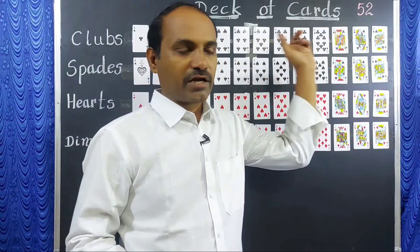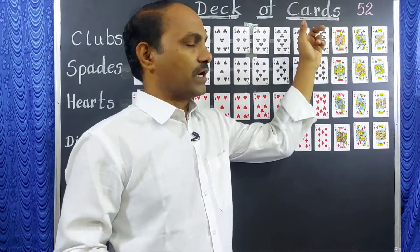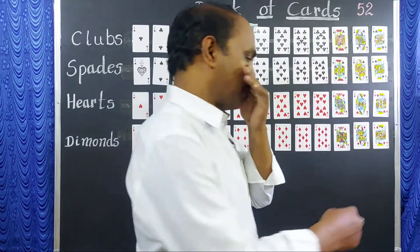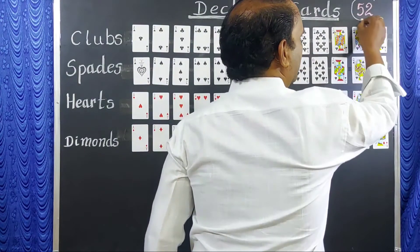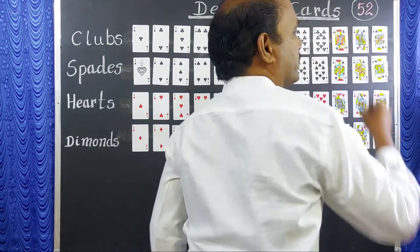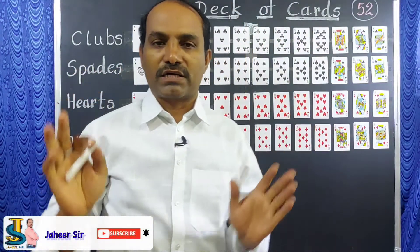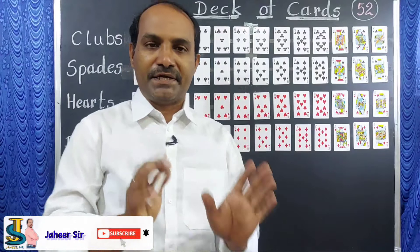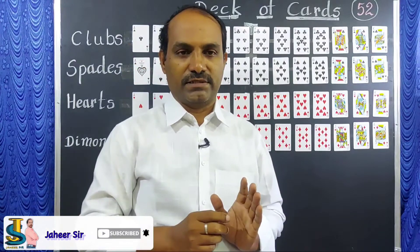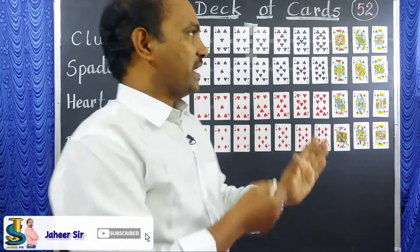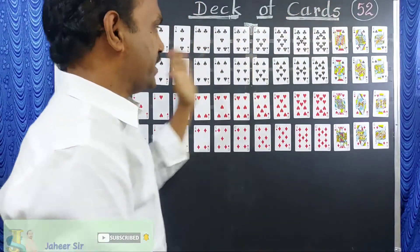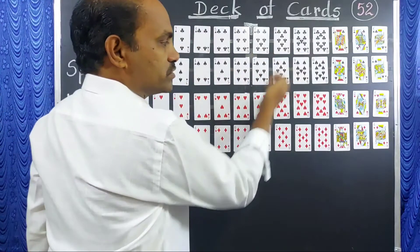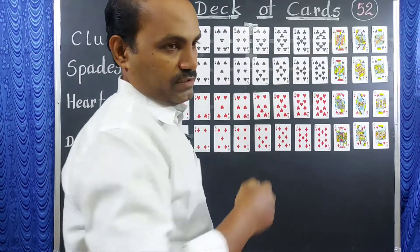Look at this — in a deck of cards, there are overall 52 cards. Total 52 cards are there in a deck of cards, and those 52 cards are divided into 4 suits.